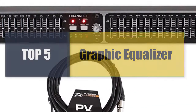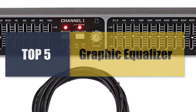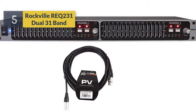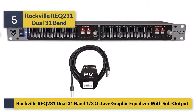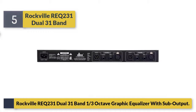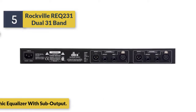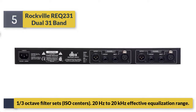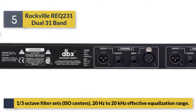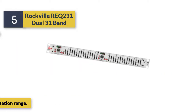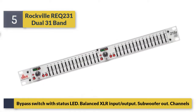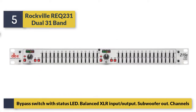Welcome to a new video: top five best graphic equalizers. Number five: Rockville REC231 dual 31-band 1/3rd octave graphic equalizer with sub output. Features 1/3rd octave filter sets, iso-centers, 20 Hz to 20 kHz effective equalization range, bypass switch with status LED, balanced XLR input/output, and subwoofer out channels.